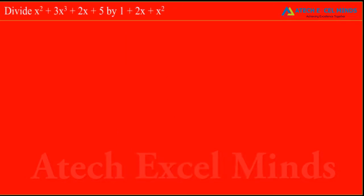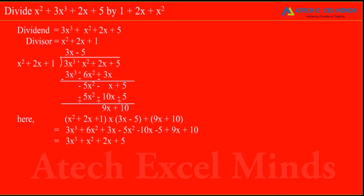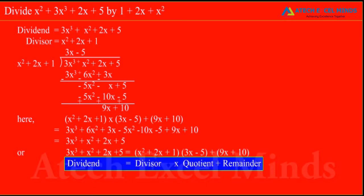Divide polynomial x square plus 3x cube plus 2x plus 5 by binomial 1 plus 2x plus x square. The first step is to write the terms of dividend and divisor in standard form, i.e. in decreasing order of their degree.